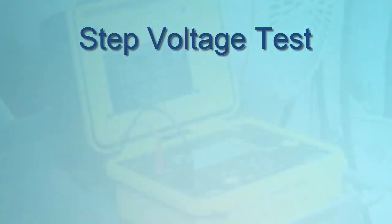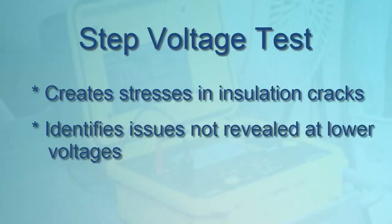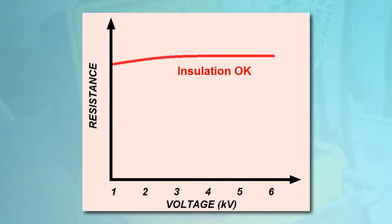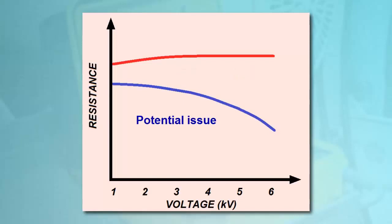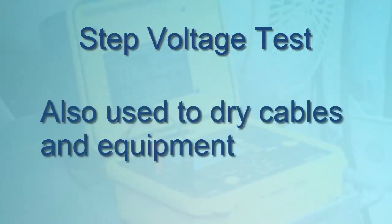The step voltage test is designed to create electrical stresses on internal insulation cracks, identifying potential problems that may not be revealed by testing at lower voltages. Insulation that is thoroughly dry, clean, and in good physical condition should provide roughly the same resistance measurement across the voltage range. If instead you observe a significant decrease in resistance at higher voltages, your insulation may be contaminated or deteriorating. Step voltage testing is also often used as a way to dry wet cables or equipment. Gradual voltage steps, applied for increasingly longer durations, can facilitate drying through heating.